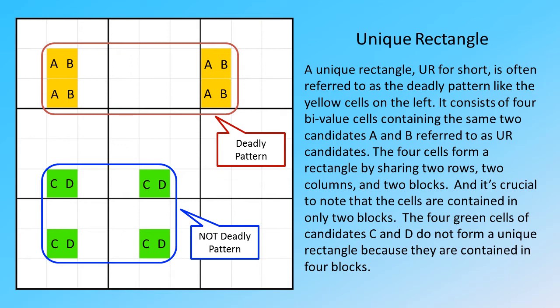The four cells form a rectangle by sharing two rows, two columns, and two blocks. It's crucial to note that the cells are contained in only two blocks. The four green cells of candidates C and D do not form a unique rectangle because they are contained in four blocks.